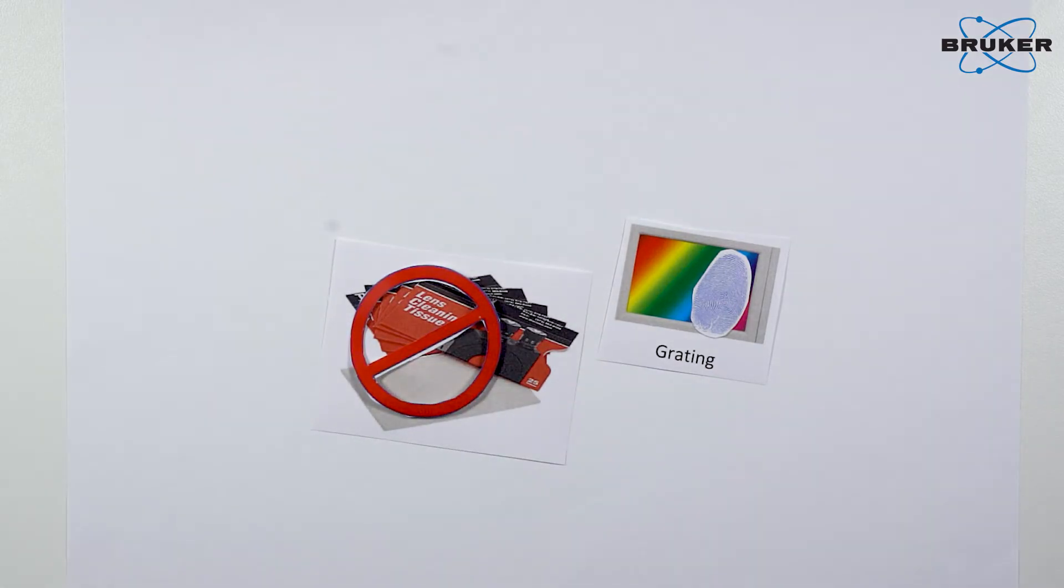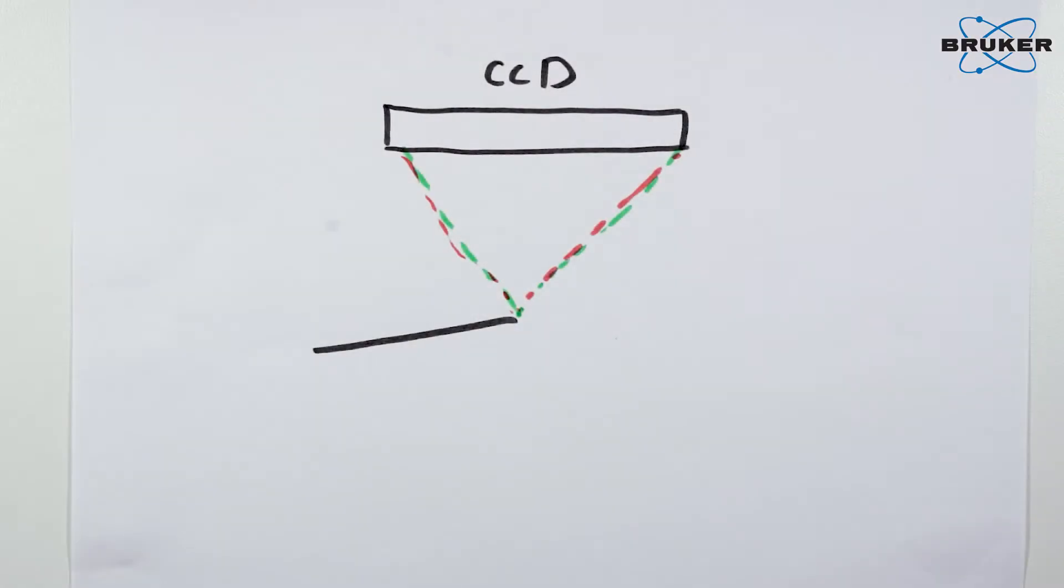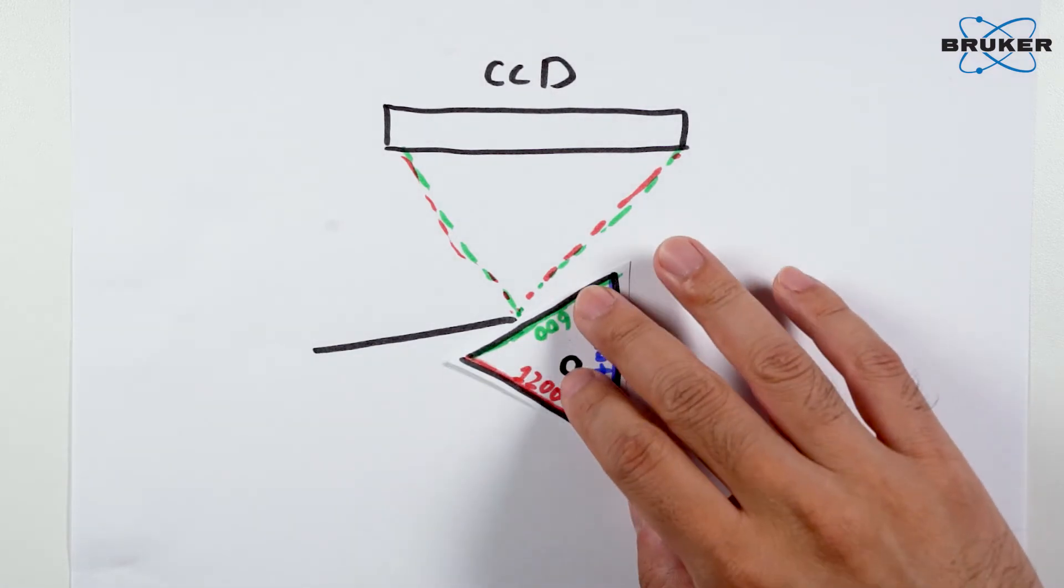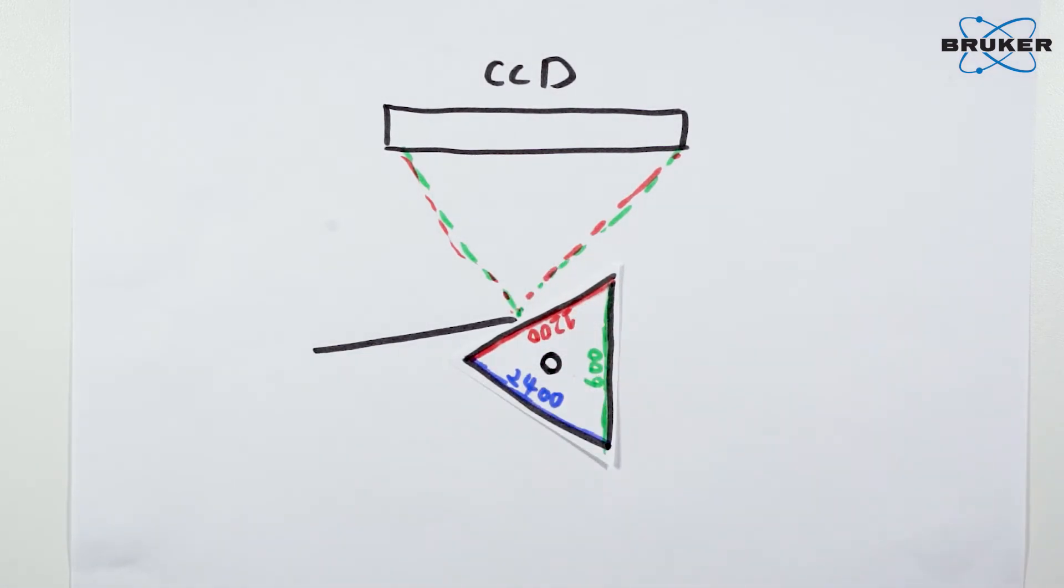as wiping will make the performance even worse. Modern Raman spectrometers don't require you to handle gratings manually. They often have 2, 3, or even 4 gratings installed on a turret and use a motor to rotate them.